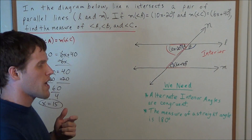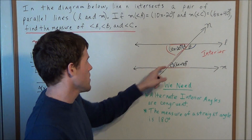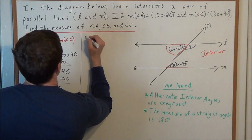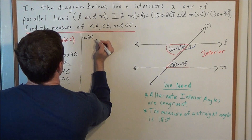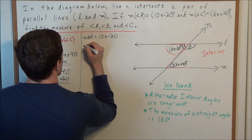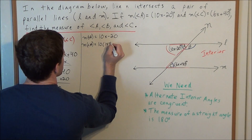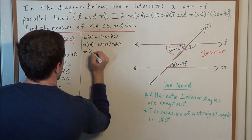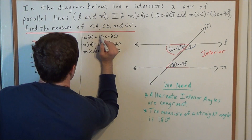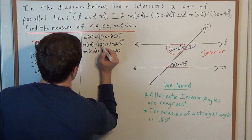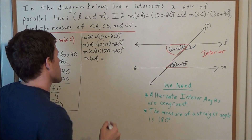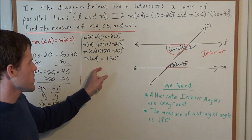We need to be careful because x equals 15 is not the measure of our angle. We need to plug x equals 15 into the expression 10x minus 20. So the measure of angle A equals 10 times 15 minus 20. Simplifying: 10 times 15 is 150, so 150 minus 20, and now we can put this in degrees because we're measuring in degrees. The measure of angle A is 150 minus 20, which is 130 degrees.